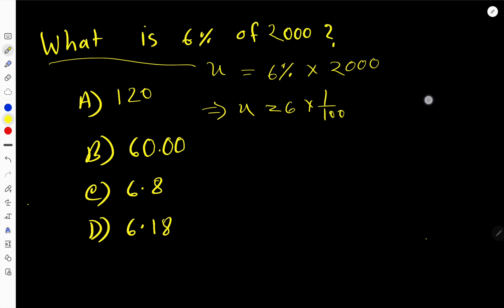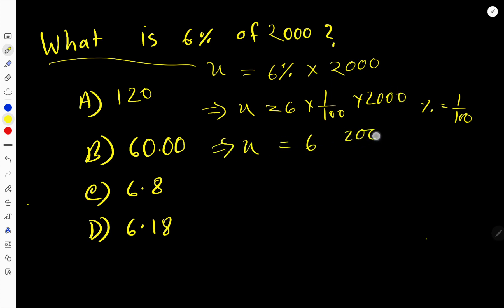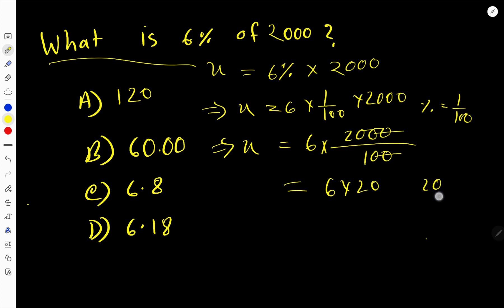So we have 6 times 1 over 100 times 2000. We can rewrite this as 2000 divided by 100 — the two zeros cancel each other, so we are left with 6 times 20.